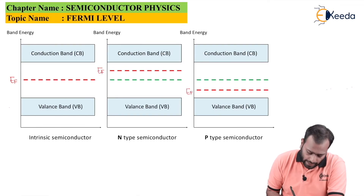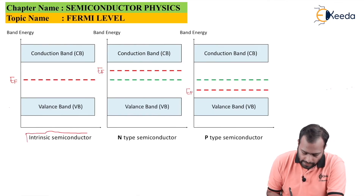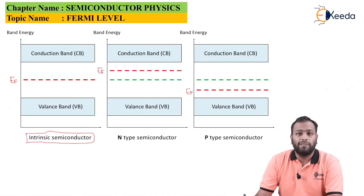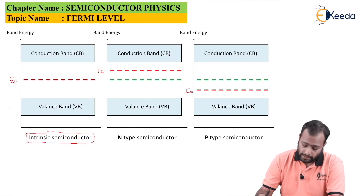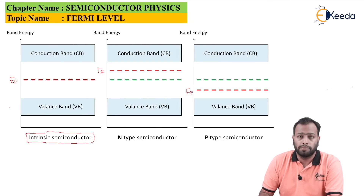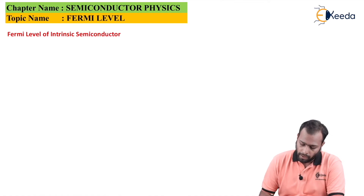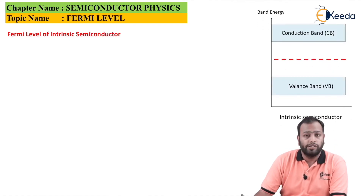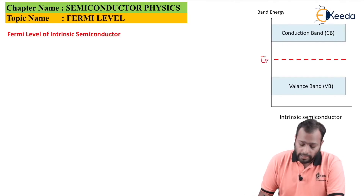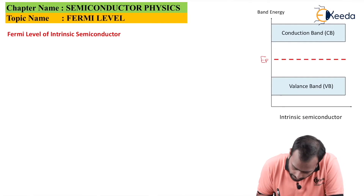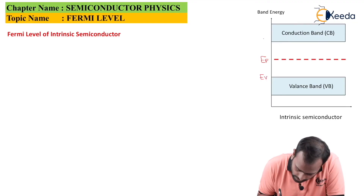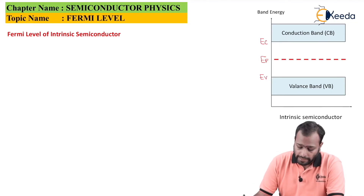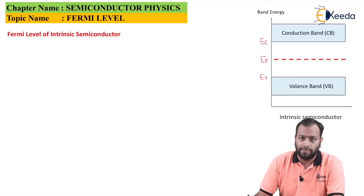As you saw, in an intrinsic semiconductor the Fermi level lies exactly between the conduction band and valence band — but do we have a proof for it? Yes. This is the most important question for your university exams: the Fermi level of an intrinsic semiconductor. Let's recall the band energy diagram for an intrinsic semiconductor. This is the Fermi level, this is EV — the energy of the valence band — and this is EC — the energy of the conduction band. The notations are very important: EC is the energy of the conduction band, EV is the energy of the valence band, and EF is the Fermi level energy.